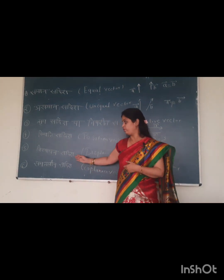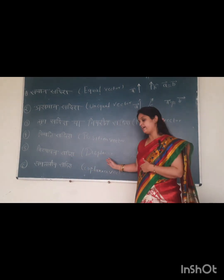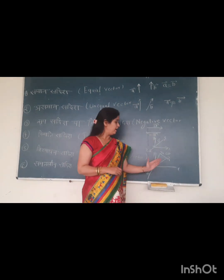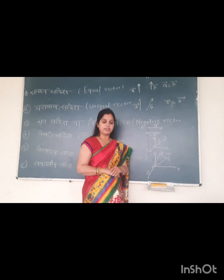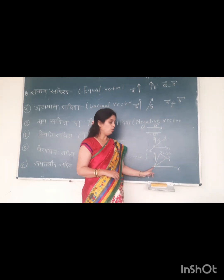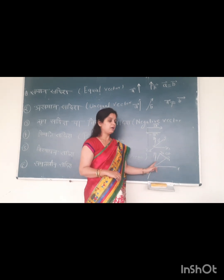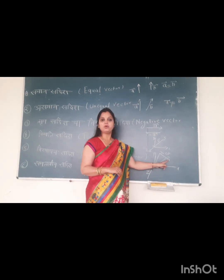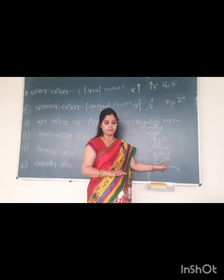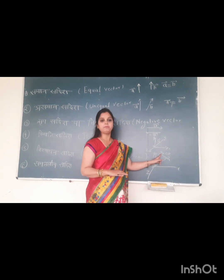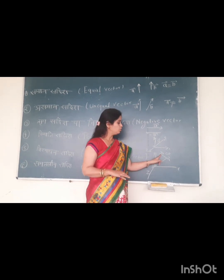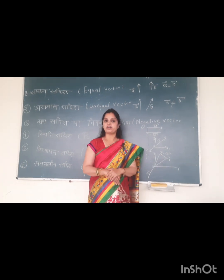The next type is displacement vector (visthapan sadish). To represent a displacement vector, we use the x-axis and axes. Here O is the origin with respect to which we check the displacement vector. There is a point P1 where a particle is located at time t1. After some time, its position becomes P2. So the displacement from P1 to P2 is given by P2 minus P1, which represents the displacement vector.